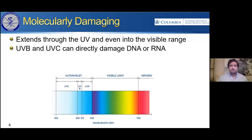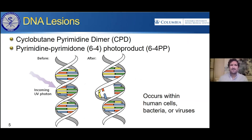These wavelengths of UV light, and even extending somewhat into the visible range, interact with biological materials and can cause molecular damage. They don't have adequate energy to ionize an atom, but they do have enough energy to damage a molecule. UVB and UVC wavelengths, which are the most energetic of the ultraviolet, have enough energy to damage DNA or RNA. The same kind of damage can occur within human cells, bacteria, or even viruses.